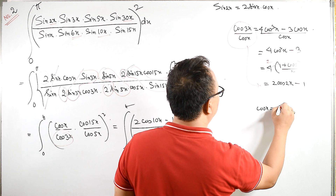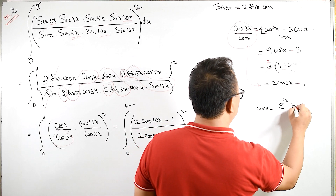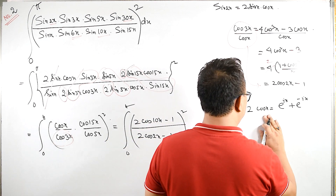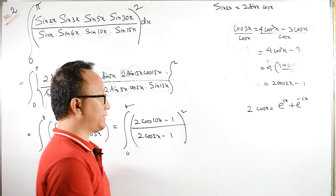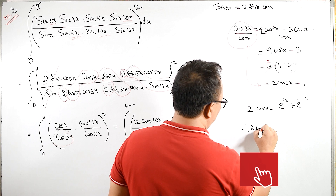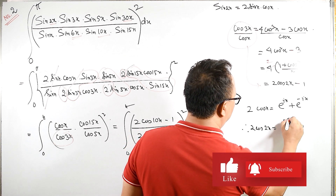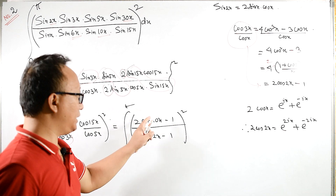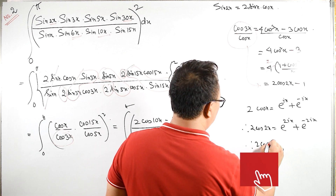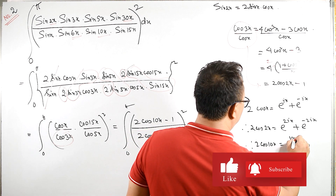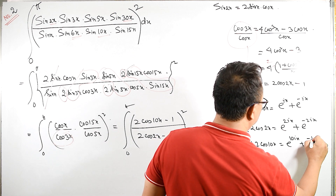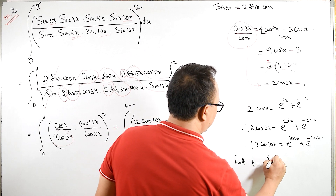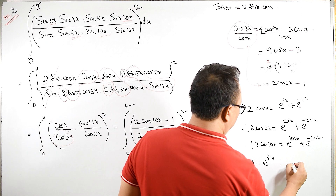The same way we will get 2 cos 10x minus 1 — the whole square. Now we have cos x equals e^(ix) plus e^(-ix) upon 2. So 2 cos x equals e^(ix) plus e^(-ix). I need 2 cos 2x, therefore 2 cos 2x equals e^(2ix) plus e^(-2ix). And 2 cos 10x equals e^(10ix) plus e^(-10ix).